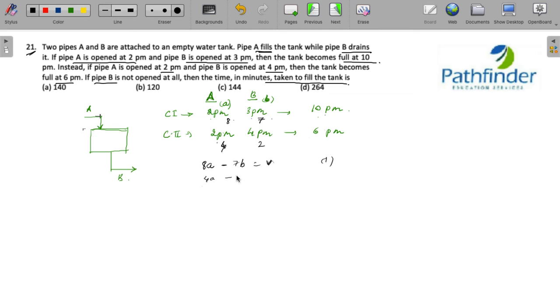I could have taken any random number instead of V. Let's take it as 100. So 100 liters is the volume of this tank, meaning 8A minus 7B equals 100.